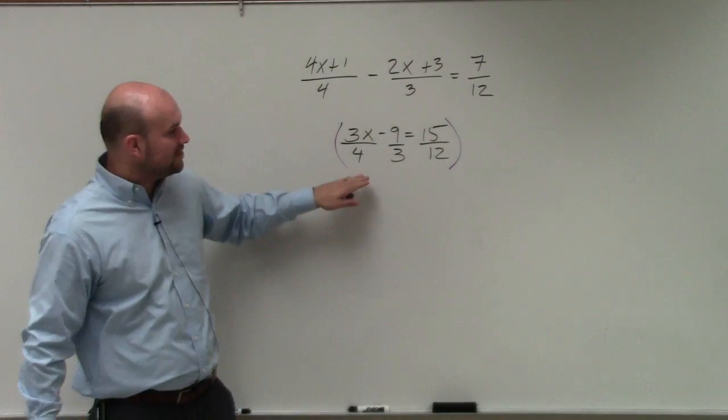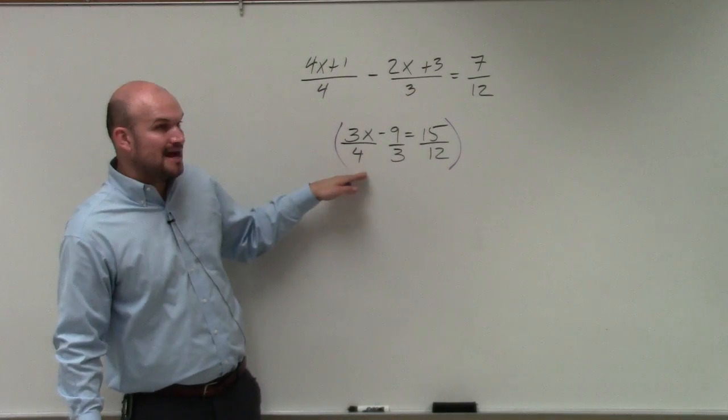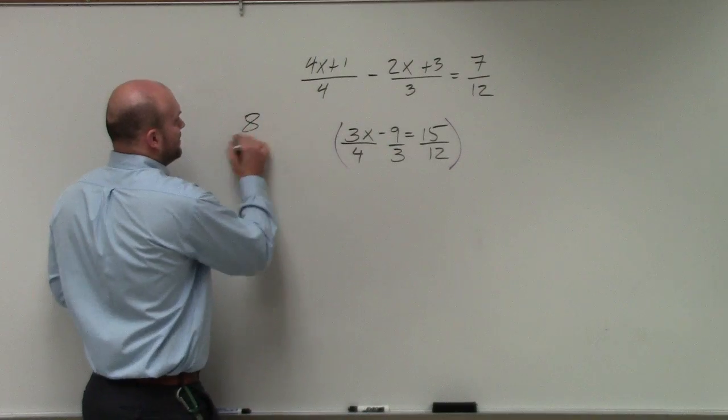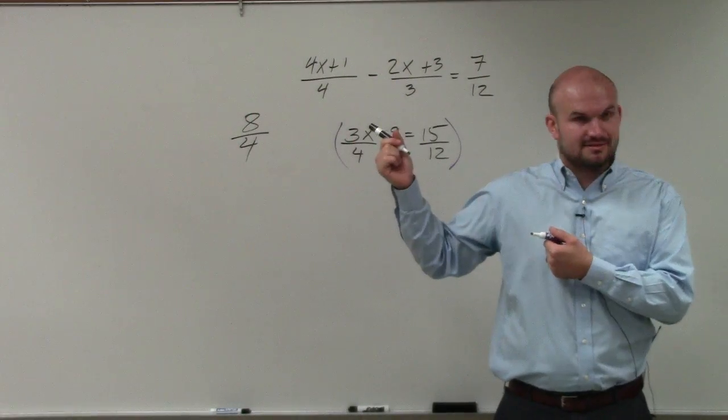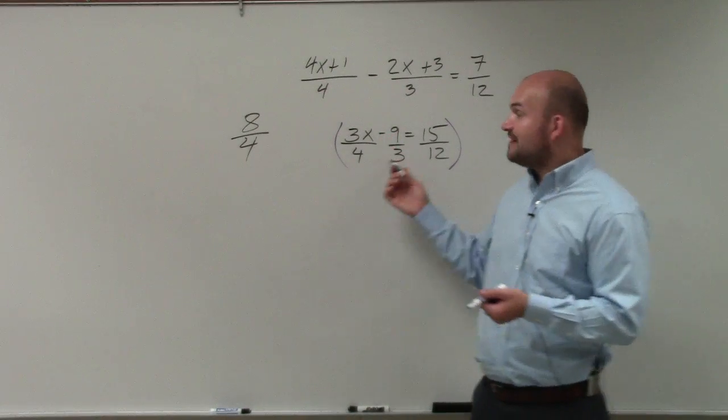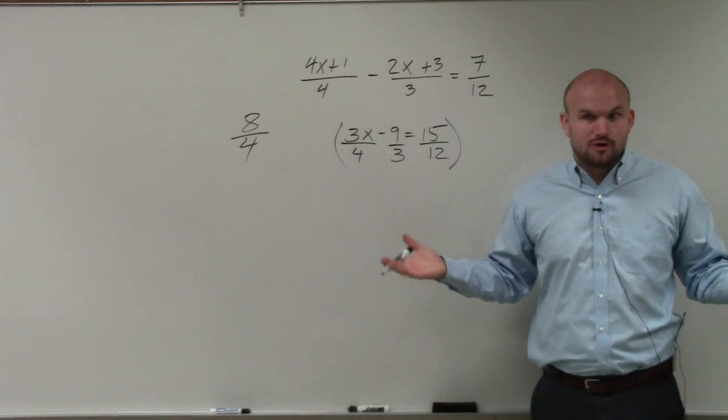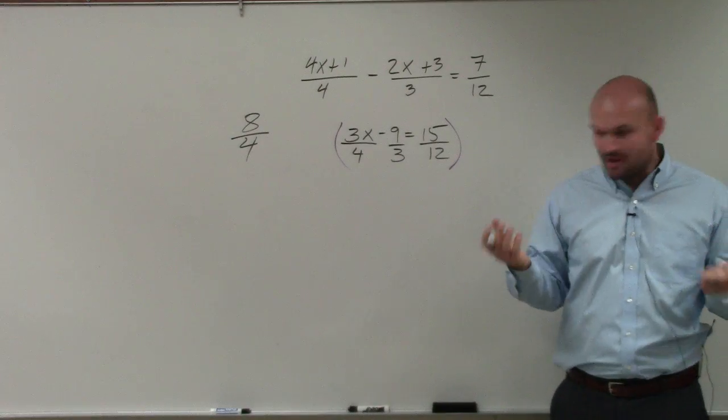And the multiplier is going to be the number that each of my denominators divides into, because if you have a number that divides into it, for instance, 8 divided by 4 is no longer a fraction, because 4 divides into 8. So we want to find a number that 4, 3, and 12 all divide into, therefore we'll have no more denominator. So the smallest number that 4, 3, and 12 divide into is 12.